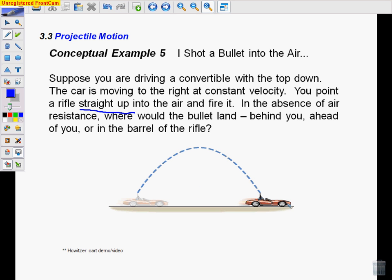You fire it while you're also moving this way. If there's no air resistance, where's the bullet going to land? Behind you, ahead of you, or in the barrel of the rifle? Think about this for a minute and pause if you need to. The answer is that it would land in the barrel of the rifle.